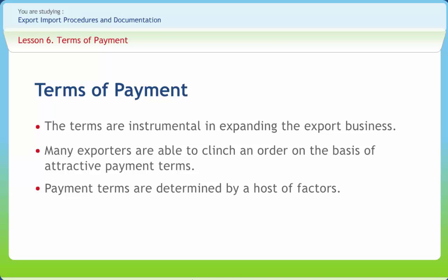Exchange control regulations play an important role in this regard. According to these regulations, the amount representing the full export value of the goods exported to all countries, other than Bhutan and Nepal, must be realized within six months from the date of shipment. Any deviation from the rule will require the Reserve Bank's prior approval.